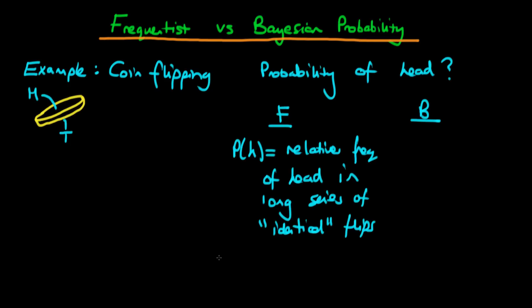In the frequentist view, we assume the data are a random sample and the data are free to vary. The things that are fixed in the frequentist case are the parameters. But what do we actually mean by the parameters being fixed, and what do we mean by identical flips in the first place?